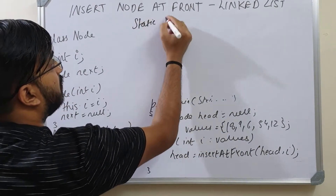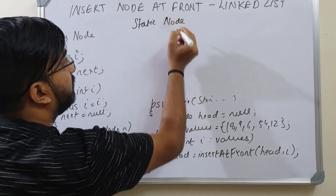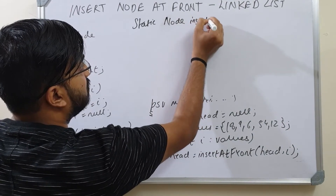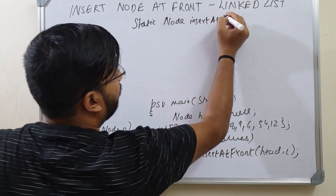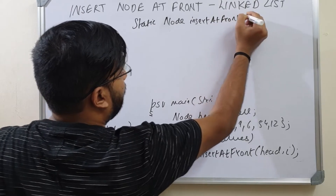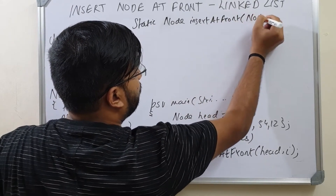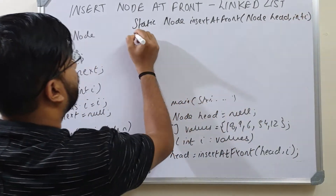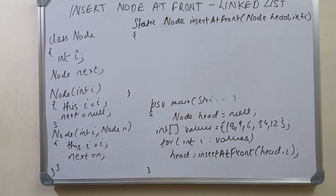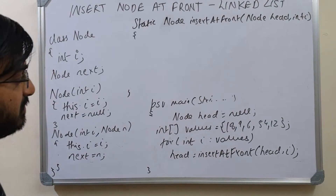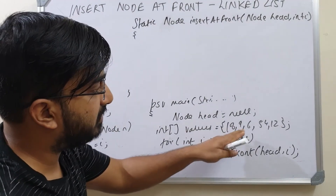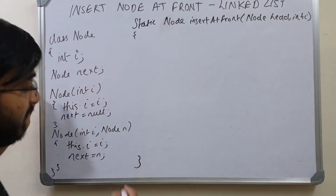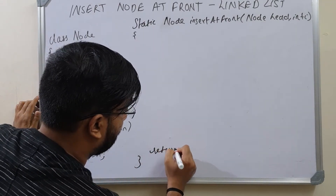The method is static node — since it is returning the head, the return type is node — and insertAtFront takes the head and an integer i. Remember these values: 18, 9, 6, 54, and 12. We will insert them and finally return the head.